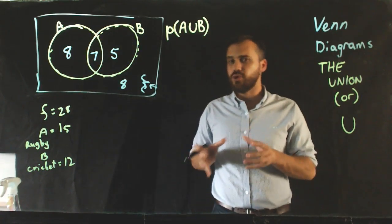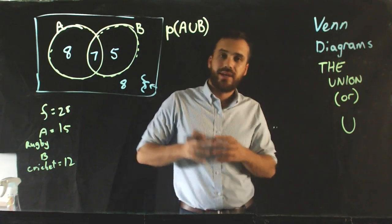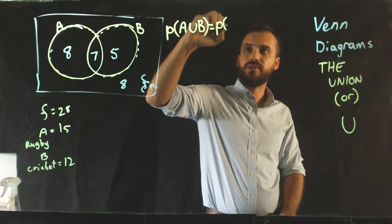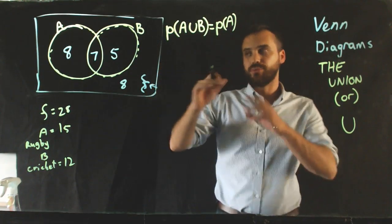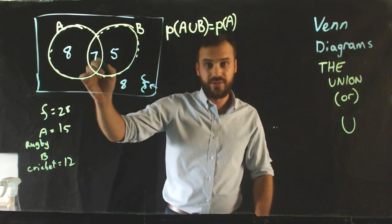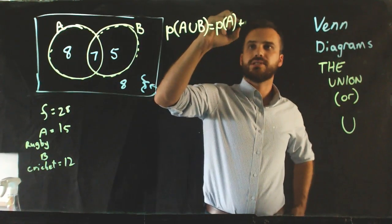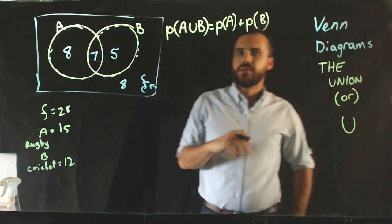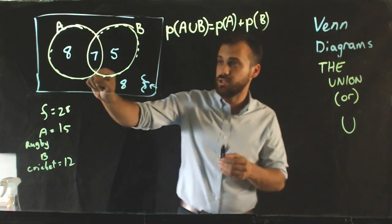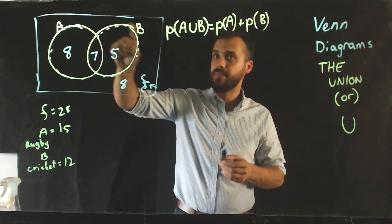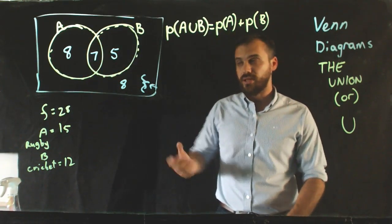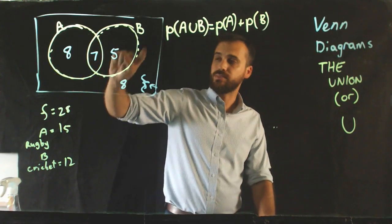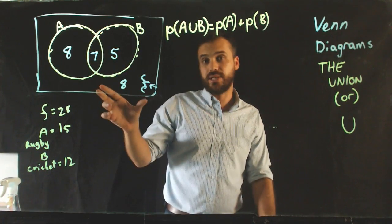Now, the really cool, neat formula that I want to show you for this is saying that the probability of A union B is equal to the probability of A. Now, the probability of A is this big circle here, the 8 and the 7. Plus the probability of B. Now, stop and think about that. That's the entire circle for B. Now, what's the issue there? If I take the probability of A, that's 8 plus 7, and the probability of B, that's 5 plus 7, and I add them together. Well, I'm going to be double counting, because I'm counting these seven people twice.